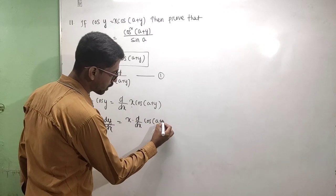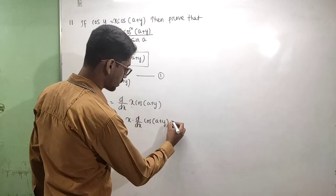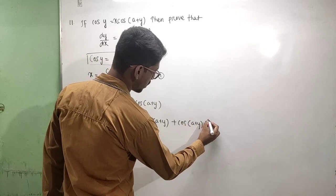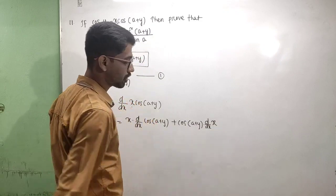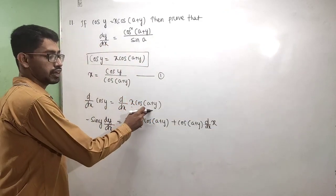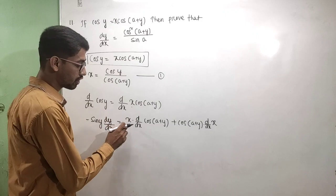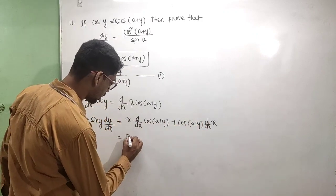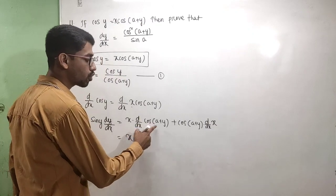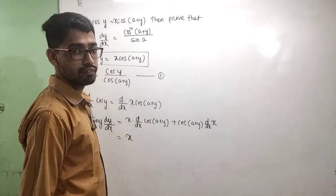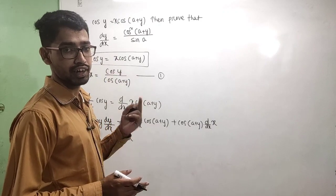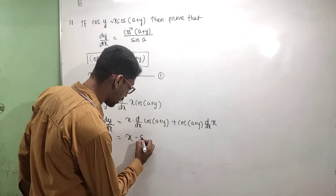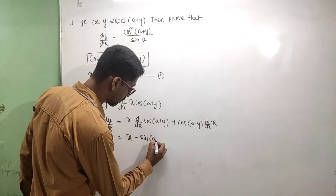Using the product rule: derivative of u·v = u · dv/dx + v · du/dx. So x into derivative of cos(a + y) plus cos(a + y) into derivative of x. Derivative of cos(a + y) is minus sin(a + y). So we get minus sin(a + y).